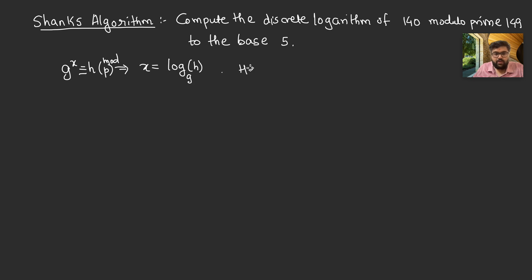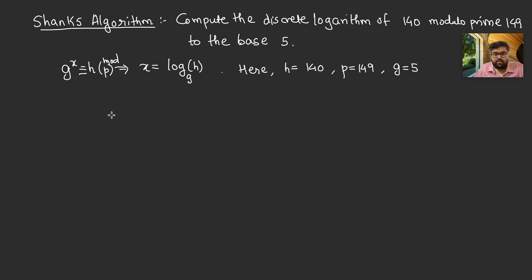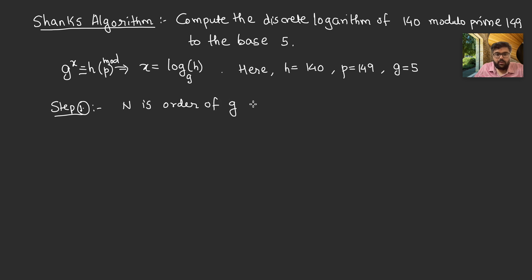Here we have h = 140, and we want to find the discrete logarithm of 140 modulo the prime 149 to the base g = 5. In the Shanks algorithm we need to make two lists. Step one: find n, the order of g modulo p.